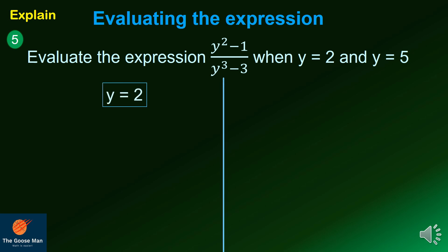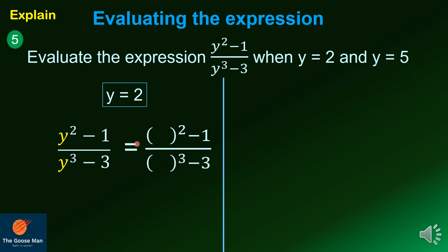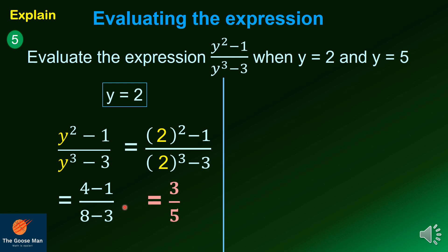Let y equal 2, then substitute into the expression y squared minus 1 all over y cubed minus 3. Since 2 squared equals 4 and 2 cubed equals 8, we get 4 minus 1 all over 8 minus 3, which equals 3 over 5. So when y equals 2, the expression equals 3 over 5.